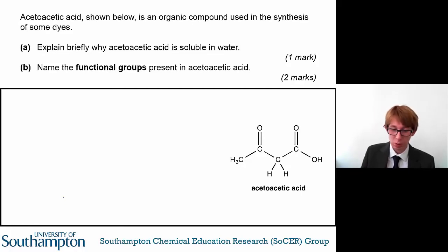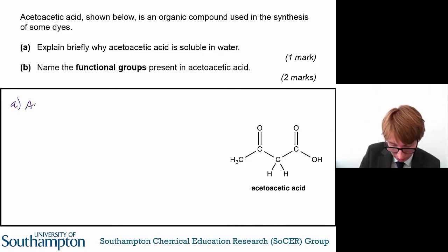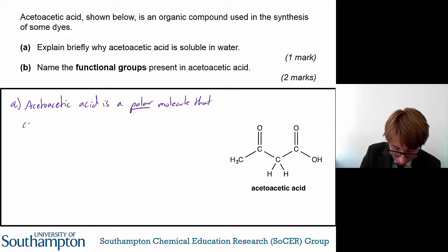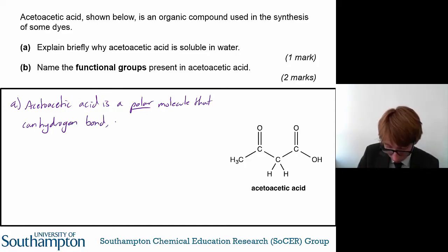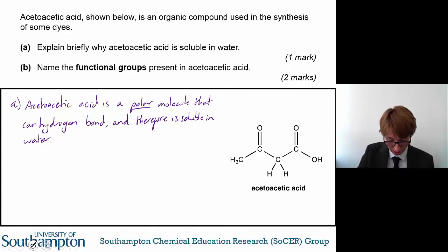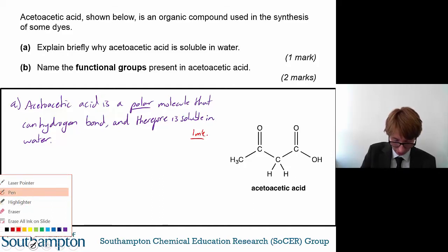The first question asks you to explain briefly why acetoacetic acid is soluble in water. There's a very simple answer to this: acetoacetic acid is a polar molecule that can hydrogen bond and therefore is soluble in water. That's all you need to say for a mark — just say that it's a polar molecule, so it can hydrogen bond and therefore is soluble in water.